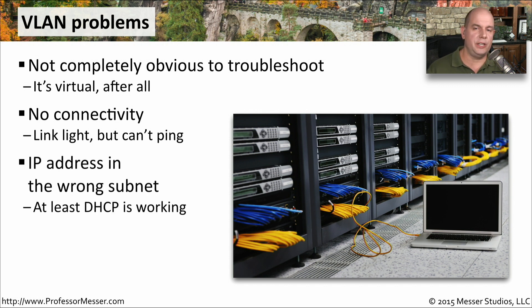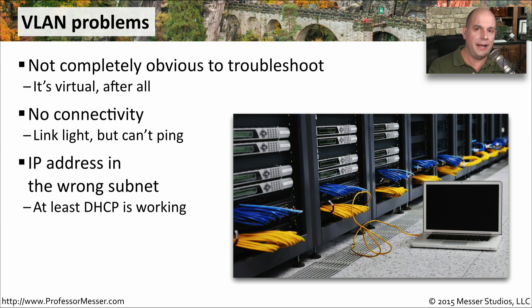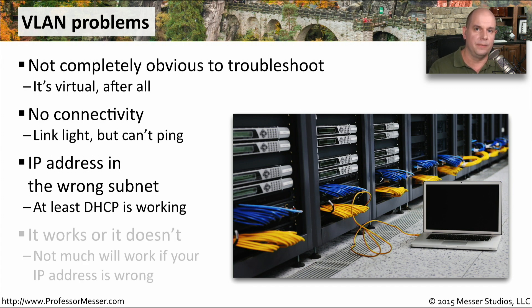If you're using DHCP, you may be able to get around these problems because you'll be assigned the correct IP address, subnet mask, and default gateway for the VLAN you happen to be connected to. It's up to the network administrator to make sure that where you're connecting is the appropriate VLAN for your use, however.